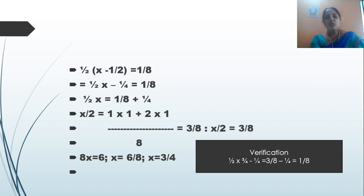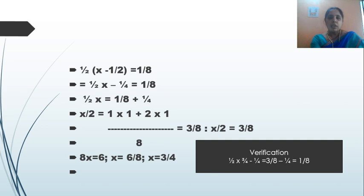On cross multiplication, I get 8x equals 6, or x equals 6/8, which in its simplest form is x equals 3/4. So 3/4 is the number — this is the solution we actually wanted.